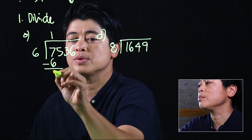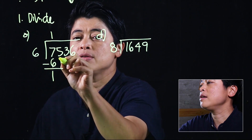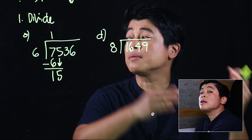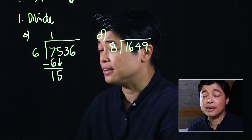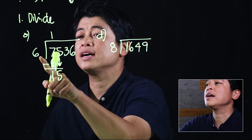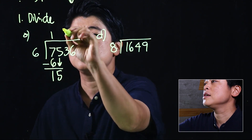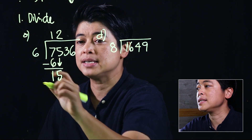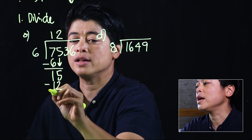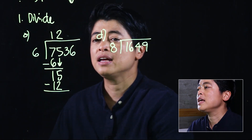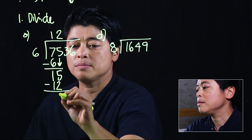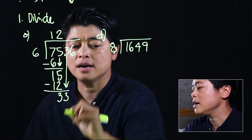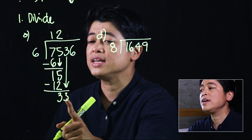Then we multiply: 1 times 6 is 6. Then we subtract, which gives us 1. Then we bring down the 5. We repeat the process: 15 divided by 6 is 2. Two times 6 is 12, and then we subtract, giving us 3. Bring down the 3.